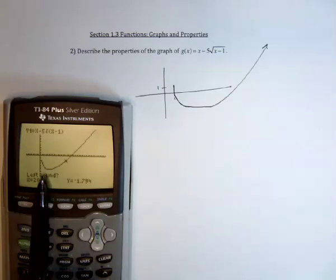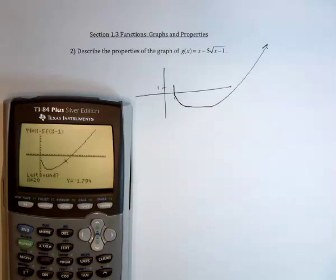What the calculator wants now is pick a number on the left of where you think the minimum is. So I would say x equals 2. Okay, yep, that's on the left of it.